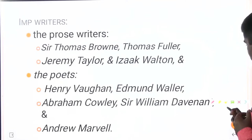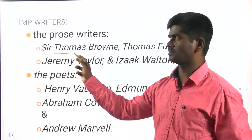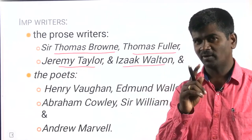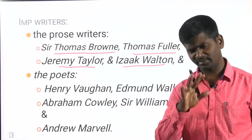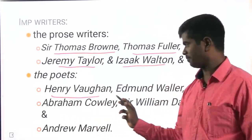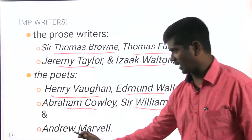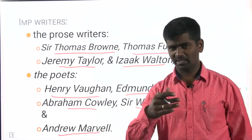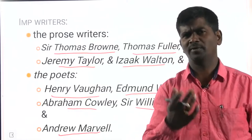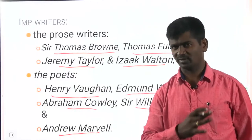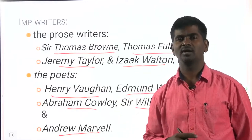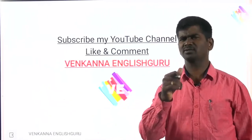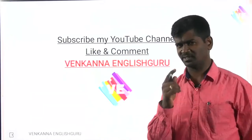The popular prose writers of the time: Sir Thomas Brown, Thomas Fuller, Jeremy Taylor, Isaac Walton. And the poets: Henry Vaughan, Edmund Waller, Abraham Cowley, Sir William Davenant, and Andrew Marvell — very, very important. Andrew Marvell was a popular Cavalier poet during the Caroline age, but in this period he becomes a Puritan. He changed his mindset from Catholic to Puritan aspects.